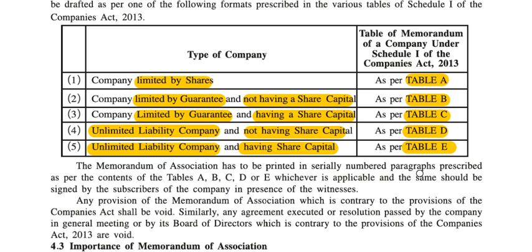The MOA has to be printed in serially numbered paragraphs as prescribed per the content of Table A, B, C, D, or E — whichever is applicable — and the same should be signed by the subscribers of the company in the presence of witnesses.